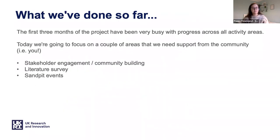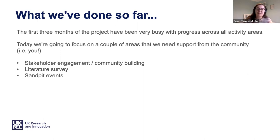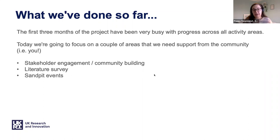We've been really busy over the last three months, making progress across all of those activity areas. Today we're only going to focus on a couple of areas — specifically the ones where we think we can ask for support and advice from the community. The three areas we'll be looking at are stakeholder engagement and community building, the literature survey, and the SAMPA events. I'm going to talk about the community building, and then hand over to my colleague Charlotte who will cover the literature survey and the SAMPA events.